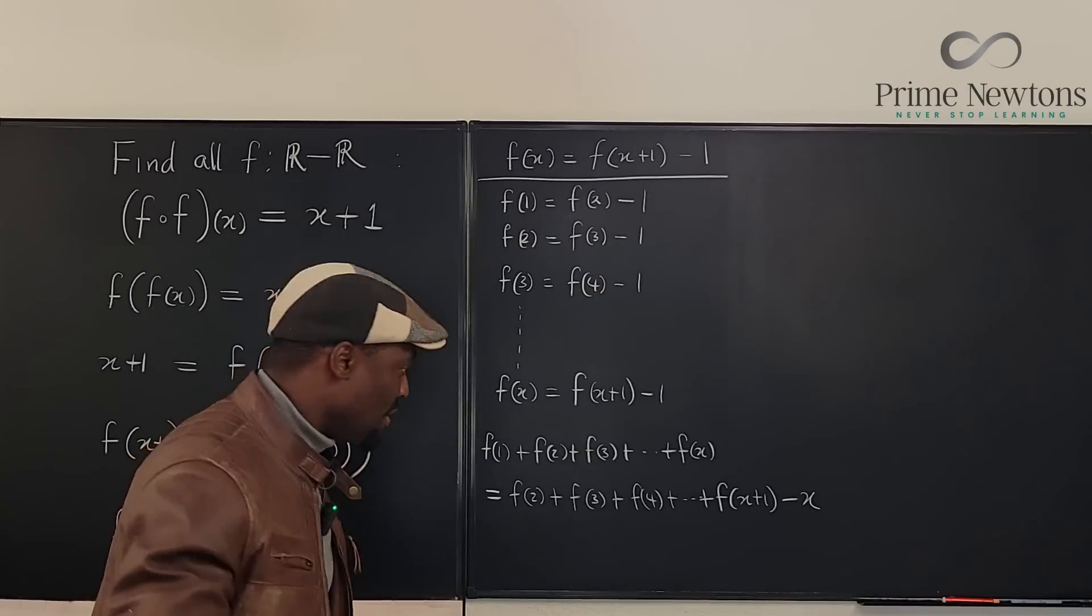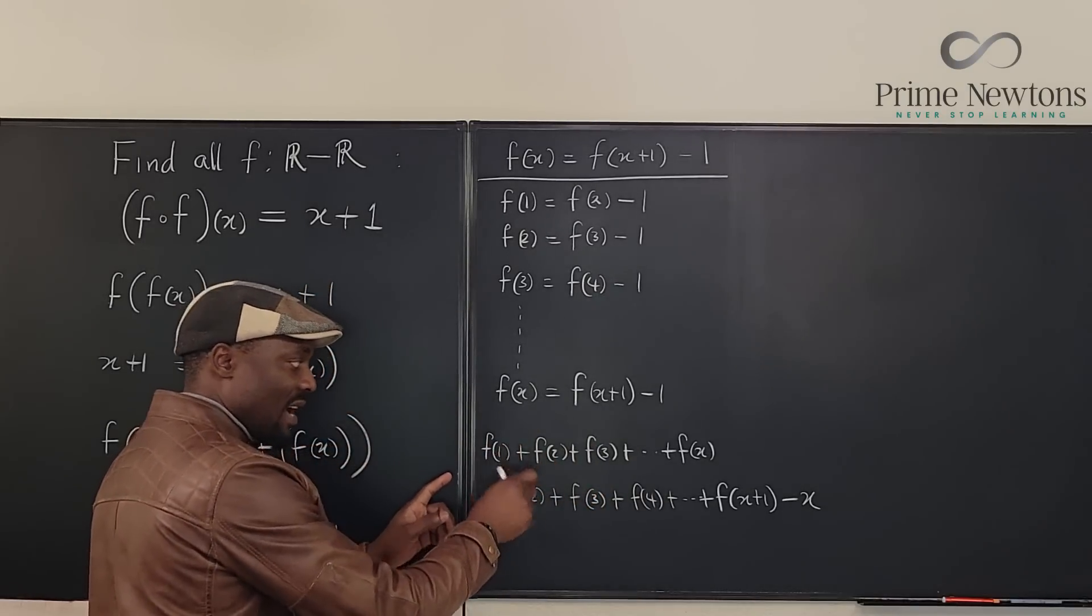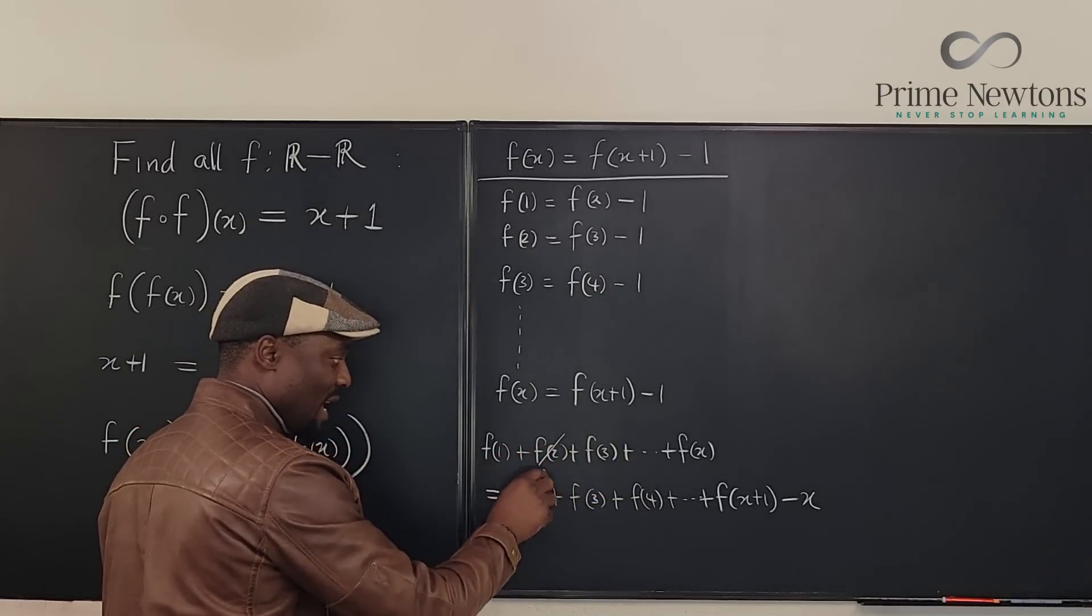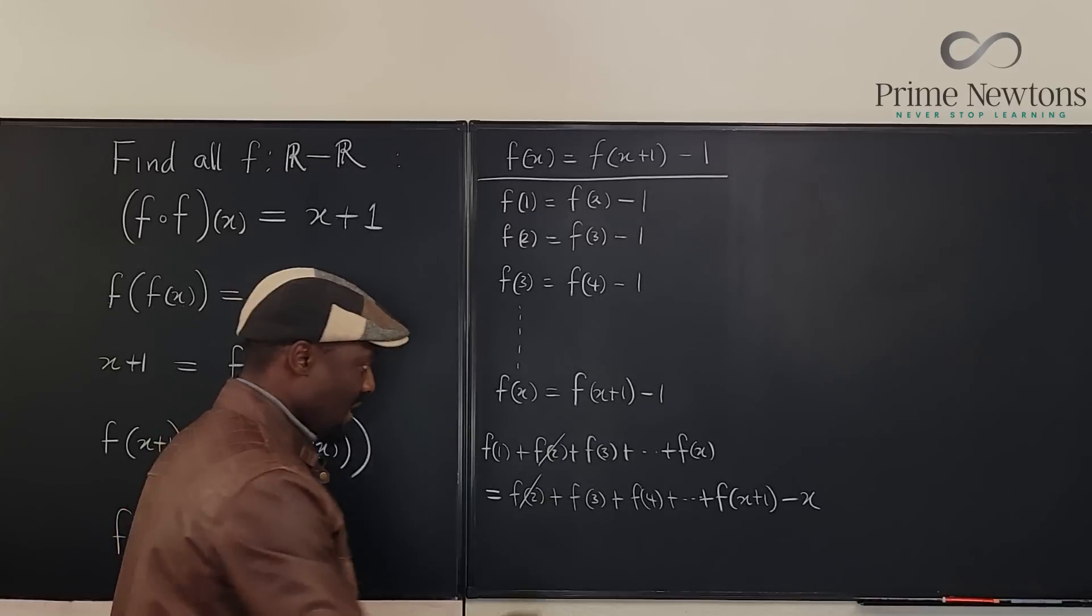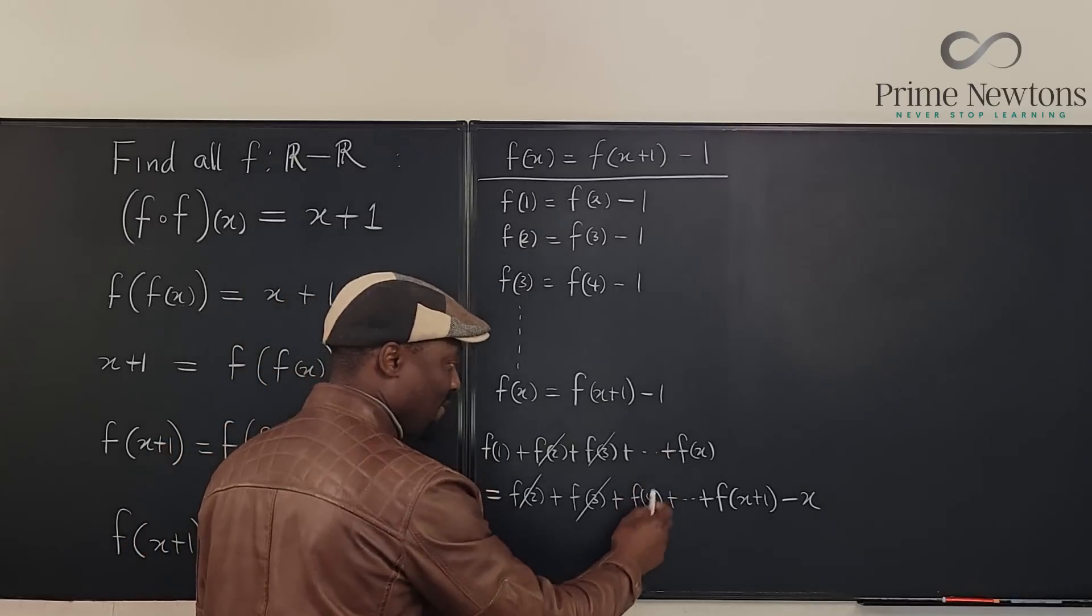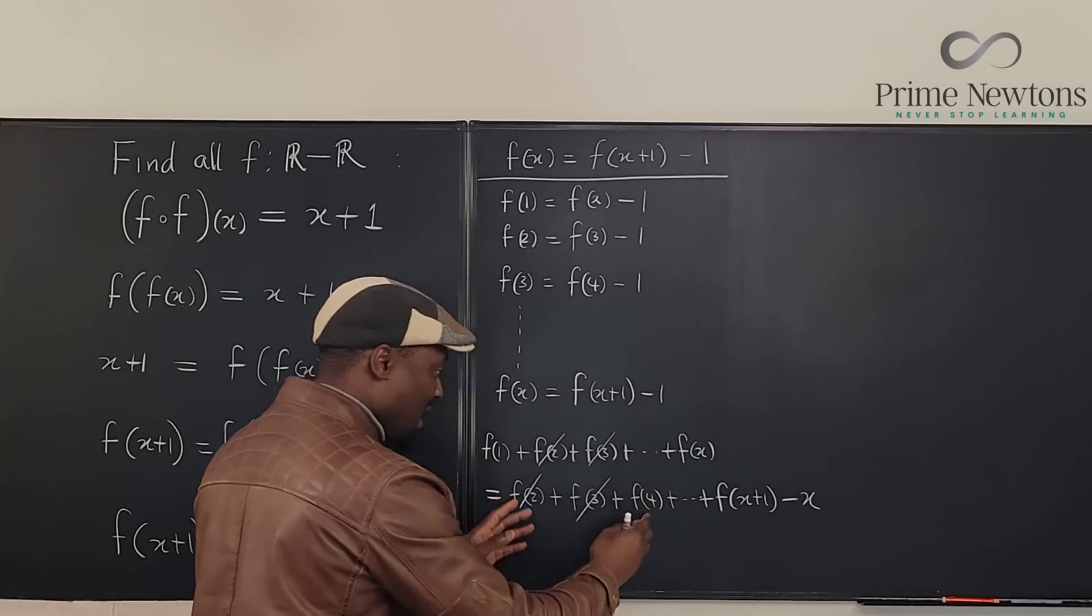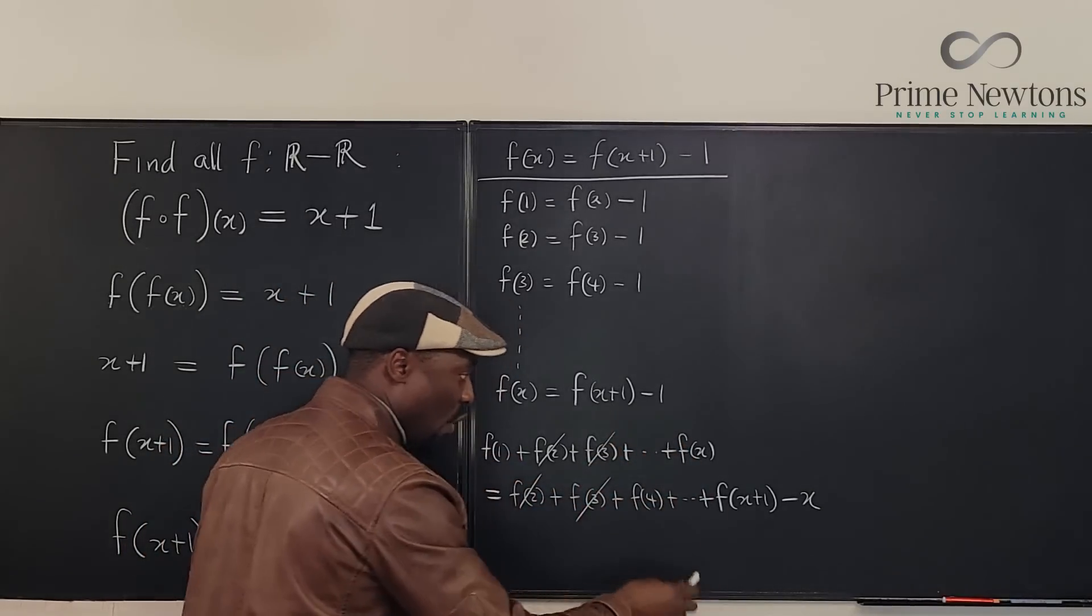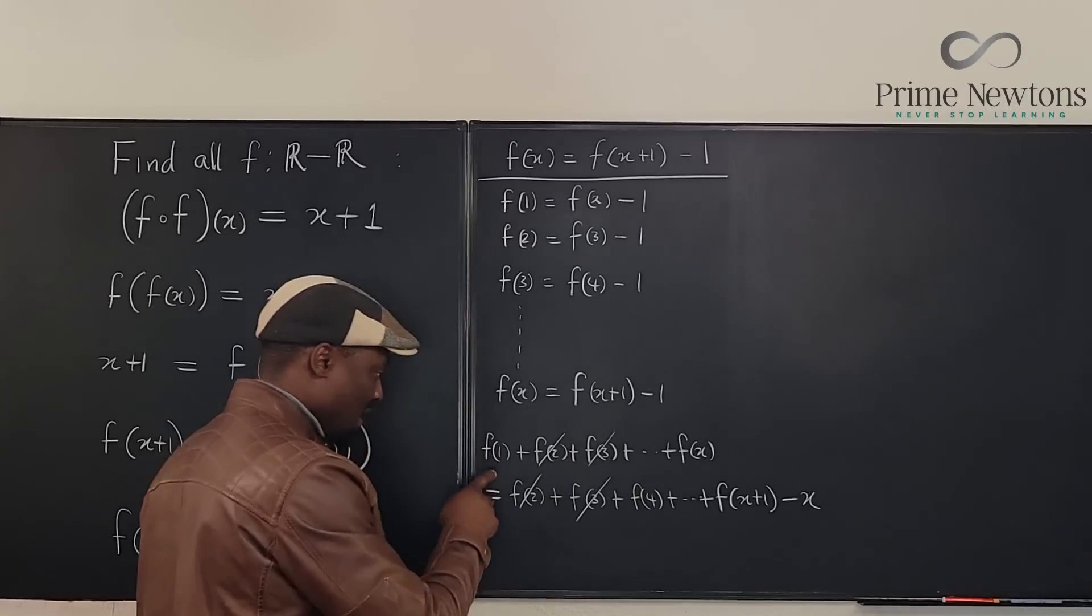Now what you observe is if we move all of this to the left hand side, f of two will cancel f of two. f of three is going to cancel f of three. f of four will be canceled by everything here is going to be canceled. The only thing that will not be canceled is f of one.